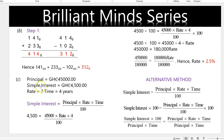Principal is 45,000, simple interest is 4,500, rate is unknown, time is 4 years. The question involves simple interest, so the simple interest formula is used. We substitute the values into the formula, and after simplifying we get 450,000. Because we are looking for rate, we divide both sides by the coefficient of rate which is 180,000.